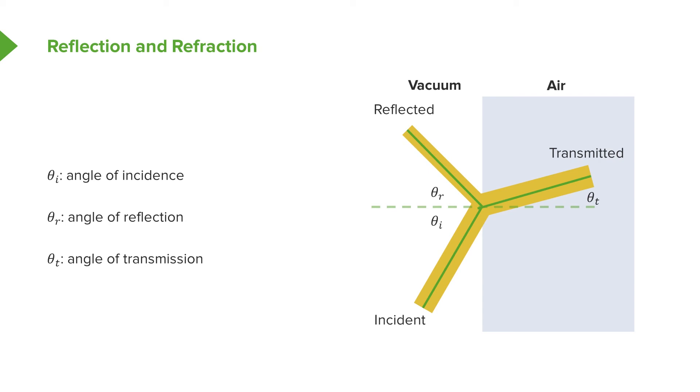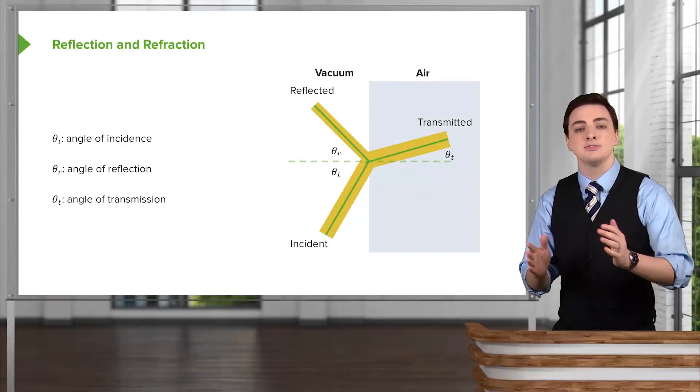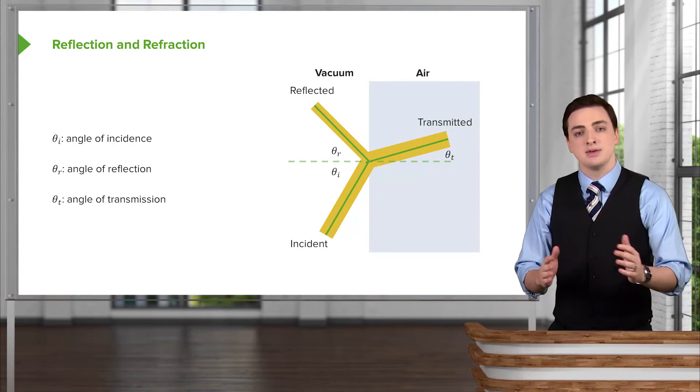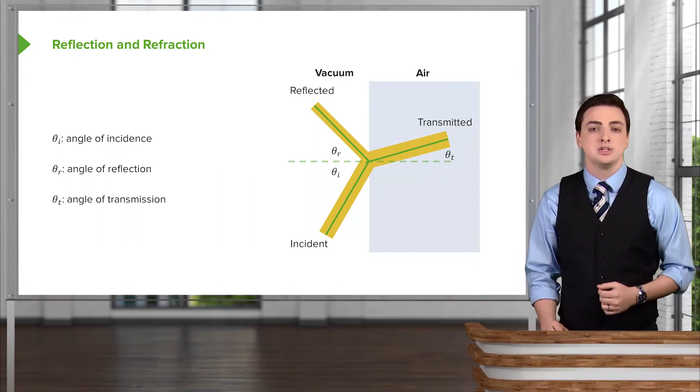Again, because the light has bent into that medium, we would expect that the incident angle, as you can see here on its way in, will be different from the transmitted angle because the light wave bends as it goes into this new medium.